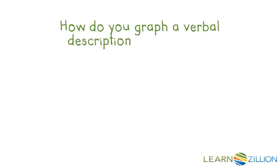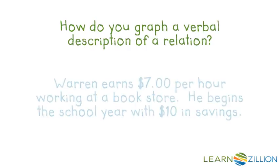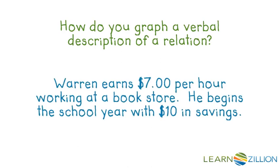How do you graph a verbal description of a relation? Warren earned $7 per hour working at a bookstore, and he begins the school year with $10 in savings.